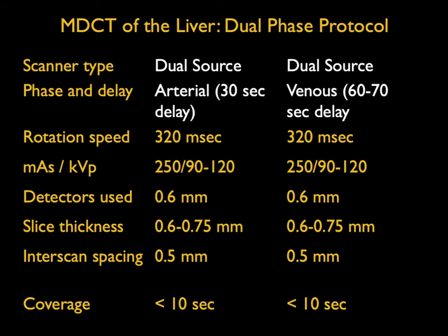We always use thin sections. We reconstruct both at 0.75 mm and 3 mm, with 3 mm for routine viewing. The thin sections are critical for being able to do quality multiplanar and quality 3D imaging.